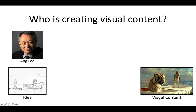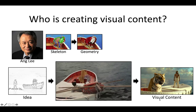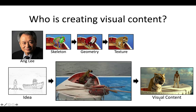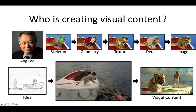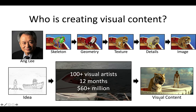For example, in the movie, professional visual artists have to specify everything just right, including skeleton, geometry, texture, down to very small details like tiger's fur for a human to perceive an image as realistic. As a result, it took hundreds of visual artists, 12 months, and a $60 million budget to create this content.